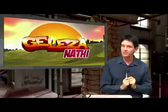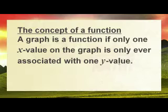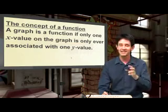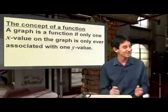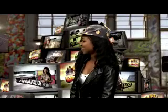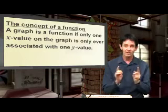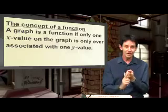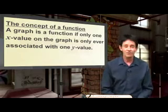A function is supposed to be very difficult, but let me show you exactly what it is. A graph is a function if only one x value on the graph is only ever associated with one y value. Think of the x as the boy and the y as the girl. So here's the x values — the boy — and the y values — the girl. If that relationship is going to be functional, one boy to one girl. One boy to two girls or more is not going to work. That's not functional.